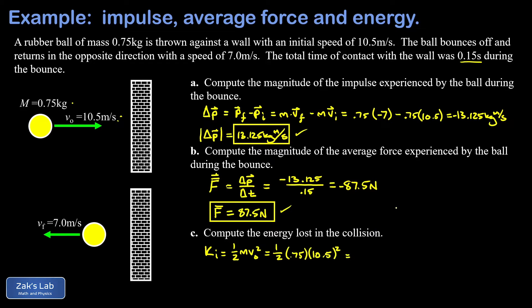Our final energy, we just do the same thing, one half times the mass times the final speed squared, and this is about 18.4 joules.